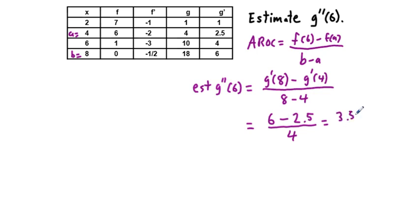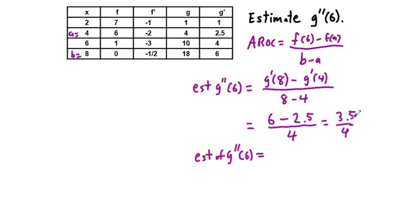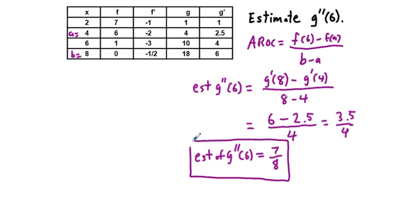So we get 3.5 over four. This fraction simplifies to seven-eighths, which is our estimate of g double prime of six. This tells us the function is increasing and also increasing at an increasing rate.